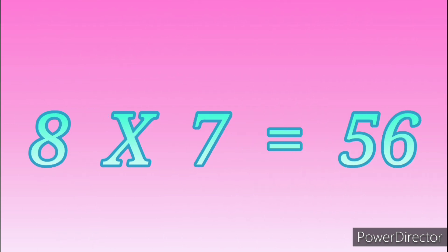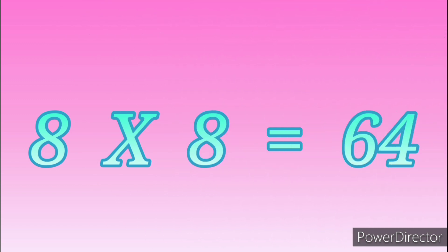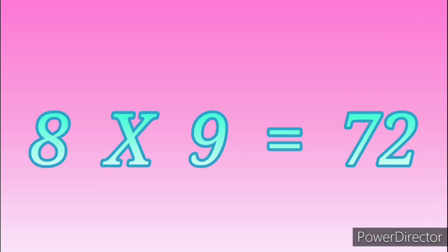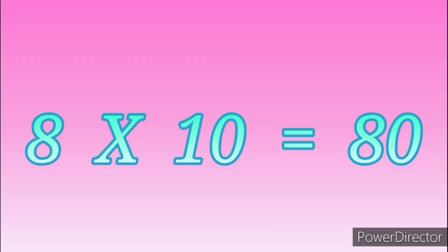Eight sevens are fifty-six. Eight sevens are fifty-six. Eight eights are sixty-four. Eight eights are sixty-four. Eight nines are seventy-two. Eight nines are seventy-two. Eight tens are eighty. Eight tens are eighty.